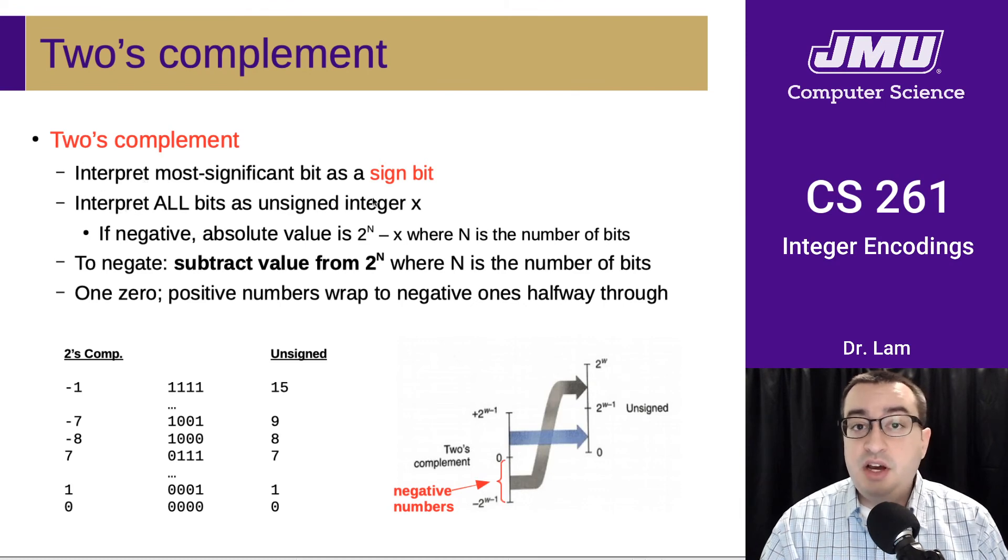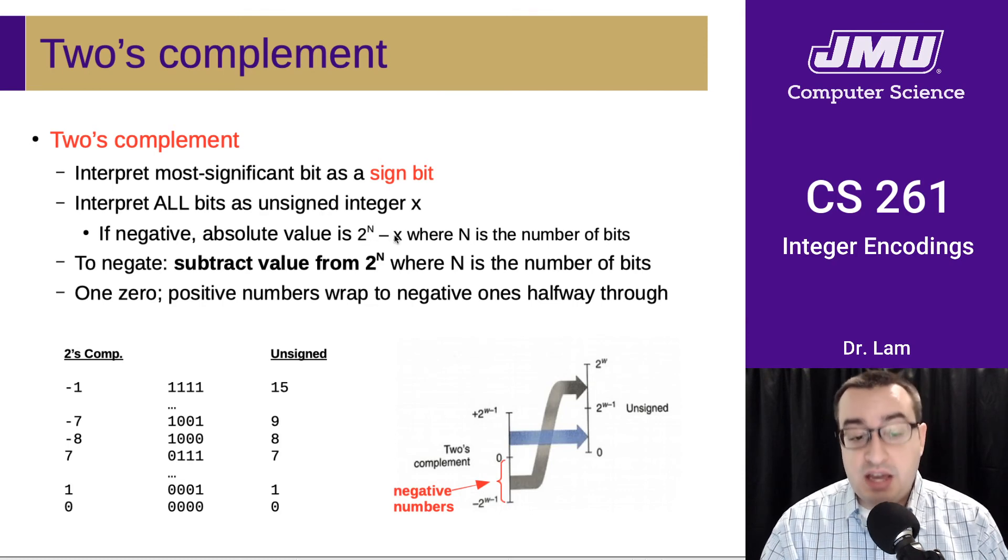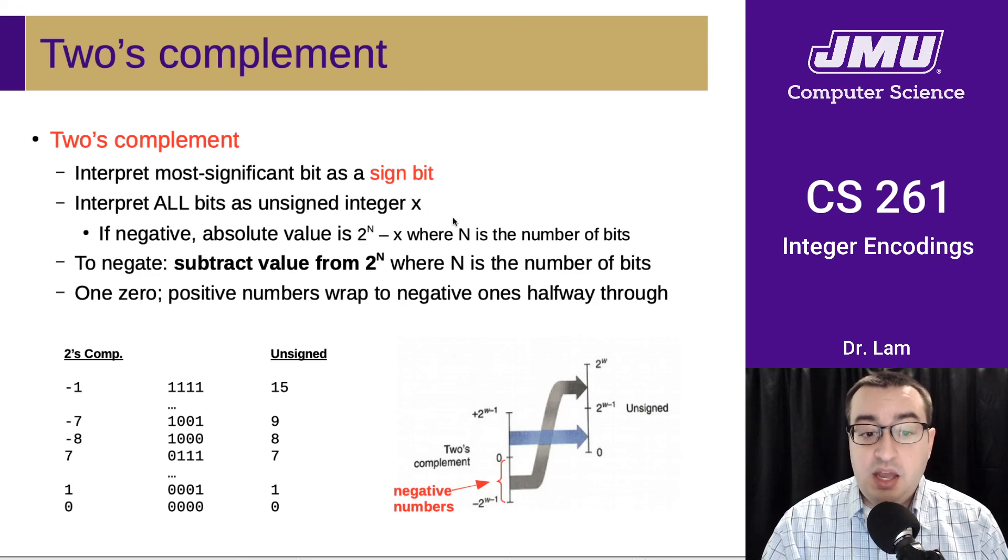we'll interpret all the bits as an unsigned integer, and then if you have a negative number, the absolute value of that number is going to be 2 to the n minus x, where x is that unsigned value, and n is the number of bits.